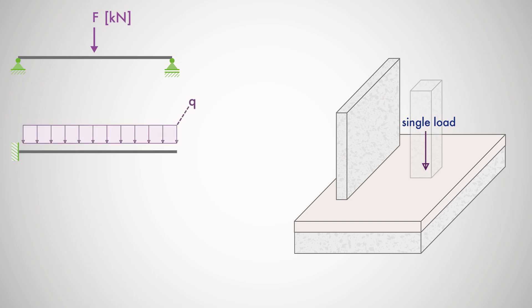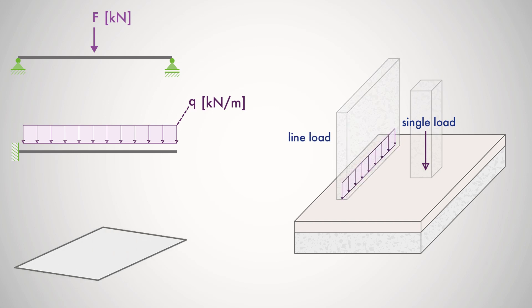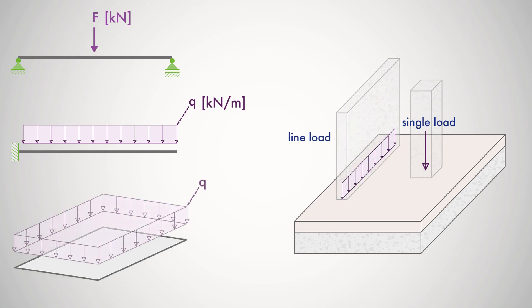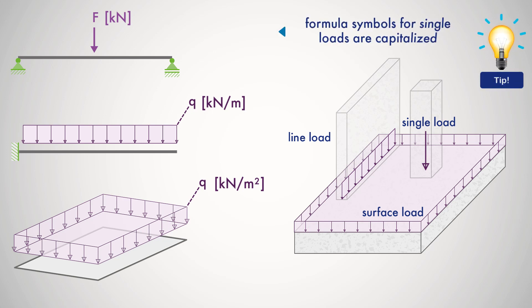Line loads are forces distributed over a certain length, indicated by a series of arrows, such as non-load-bearing walls. Forces distributed over a certain surface are symbolized by a surface of arrows, such as the floor structure of a floor slab. These are called surface loads.